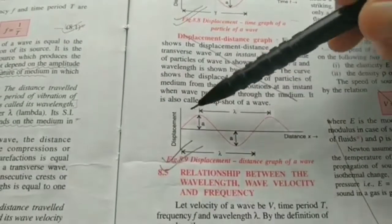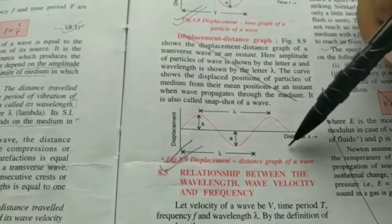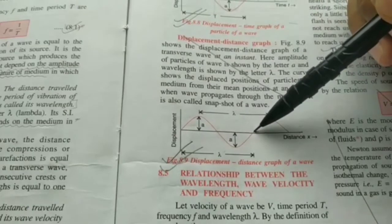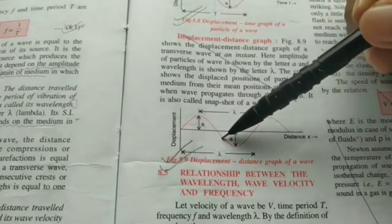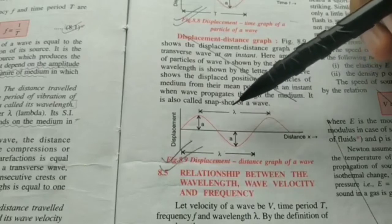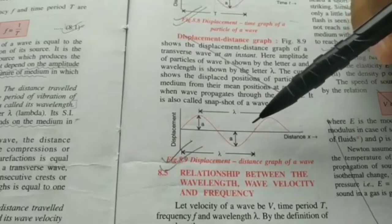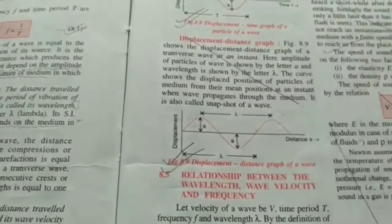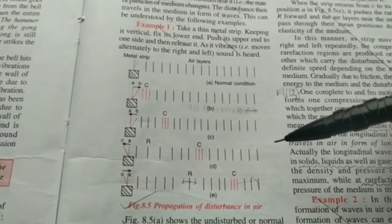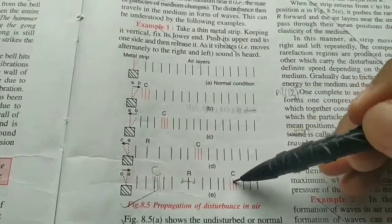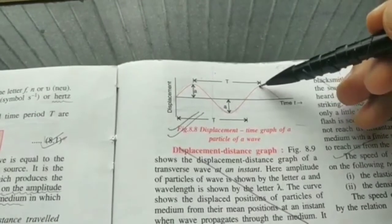In a displacement-distance graph there is no time axis — there is distance. The amplitude is still the maximum displacement, but now the length of one complete wave, or the distance traveled by the wave in one time period, is called wavelength, symbolized by lambda, with SI unit of meters. Wavelength does depend on the medium through which it passes. Wavelength is the distance between two successive crests or two consecutive troughs. In an actual sound wave, it is the distance between two consecutive compressions. Graphically, compressions are shown as crests, and rarefactions — regions of low pressure and low density — are shown as troughs.